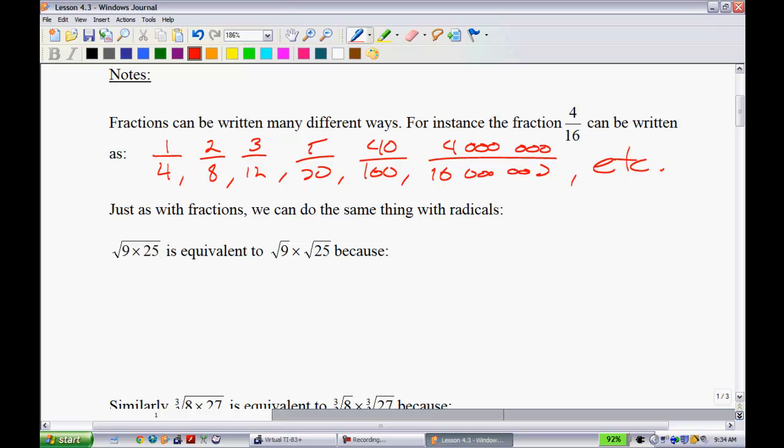Just as with fractions, we can do the same thing with radicals. The square root of 9 times 25 is equivalent to the square root of 9 times the square root of 25. If I multiply 9 times 25, I get 225, and the square root of 225 is just 15. If we take the square root of 9, we get 3. The square root of 25 is 5. 3 times 5 gives me 15. Both are the same.